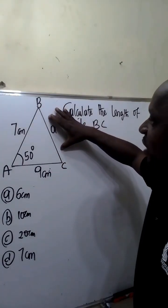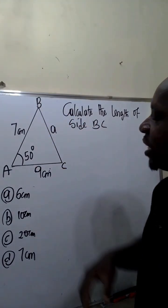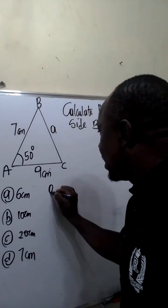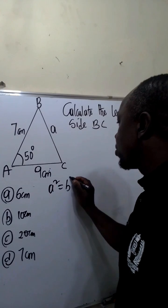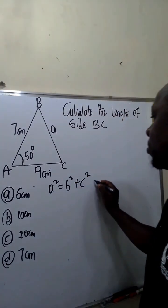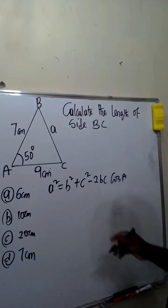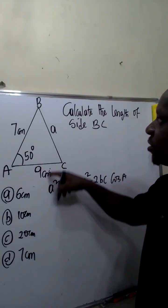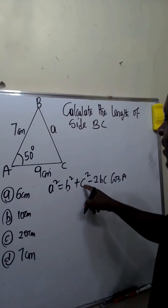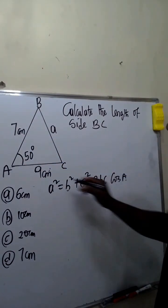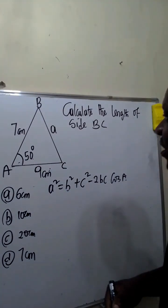To find the other side when you have two sides and one included angle, we are going to be using the cosine rule. This implies A² = B² + C² - 2BC cos A, where B is this side opposite angle B, and C is this side opposite angle C, and A is this angle which is 50 degrees.